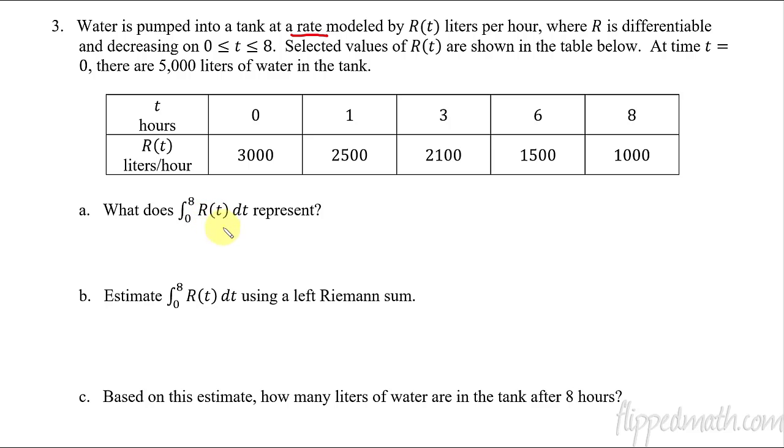All right. So the first part, what does the integral from 0 to 8 of R(t) dt represent? If we take an integral of a rate, what does that equal? It gives us net change. So we just have to figure out how to write that in a sentence. And that's this. It is the amount of water that is pumped into the tank over the 8-hour period. Or you could say over maybe the first 8 hours, however you want to say that. So from 0 hours to 8 hours.